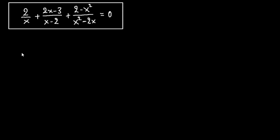Hello everyone! Today we're going to solve this equation with fractions. We have 2 over x plus 2x minus 3 over x minus 2 plus 2 minus x squared over x squared minus 2x equals 0.